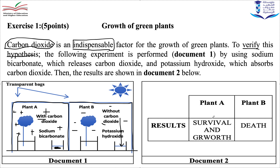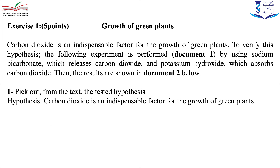The results: in experiment A the plant grew and survived, while plant B died due to the absence of carbon dioxide. No carbon dioxide means no survival and no growth. This is the introduction to the exercise, and now we move to the first question.